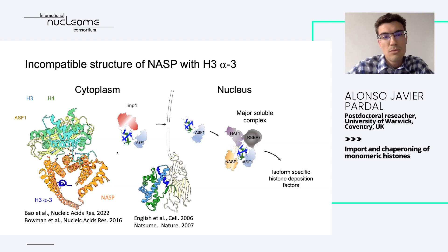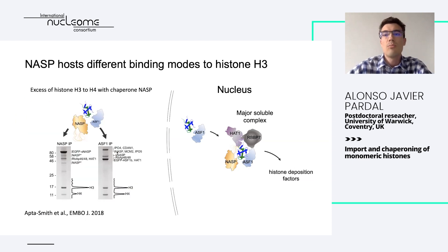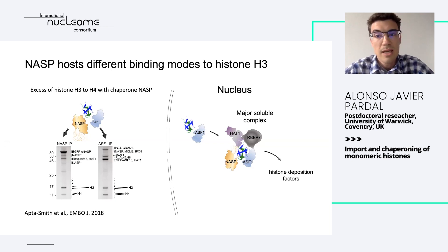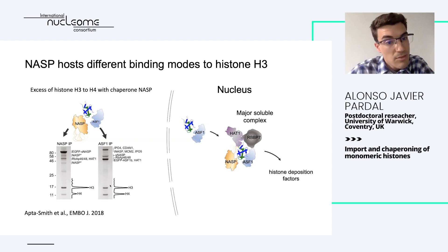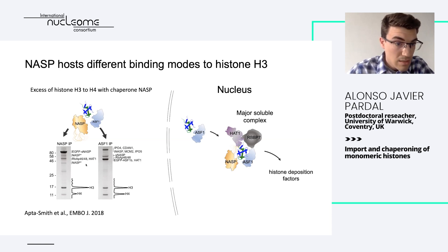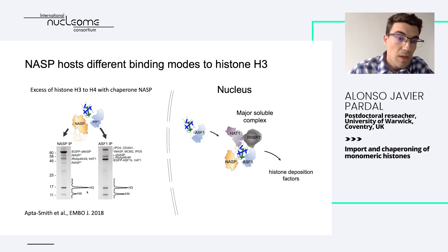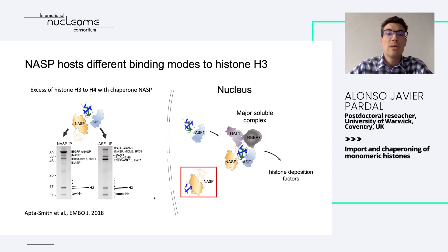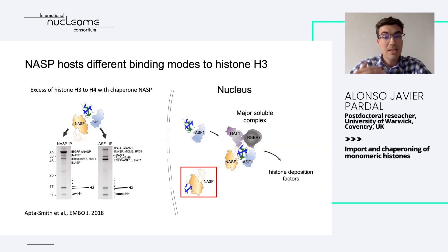To shed some light on this conundrum, previously in the lab, using a GFP trap pulldown of tagged ASF1 and NASP, we could see in Coomassie stains how ASF1 very nicely recapitulates the H3-H4 perfect one-to-one ratio. But interestingly, in the case of NASP that was not the case — there was a large excess of histone H3 over histone H4. This allowed the group to propose that there must be an additional pool of histone H3 as a monomer associated with NASP, enabled by this additional type of binding.